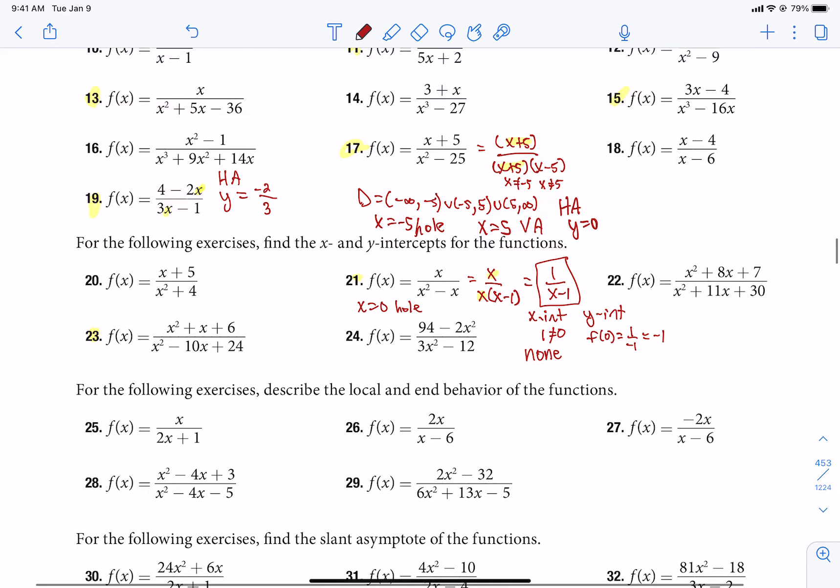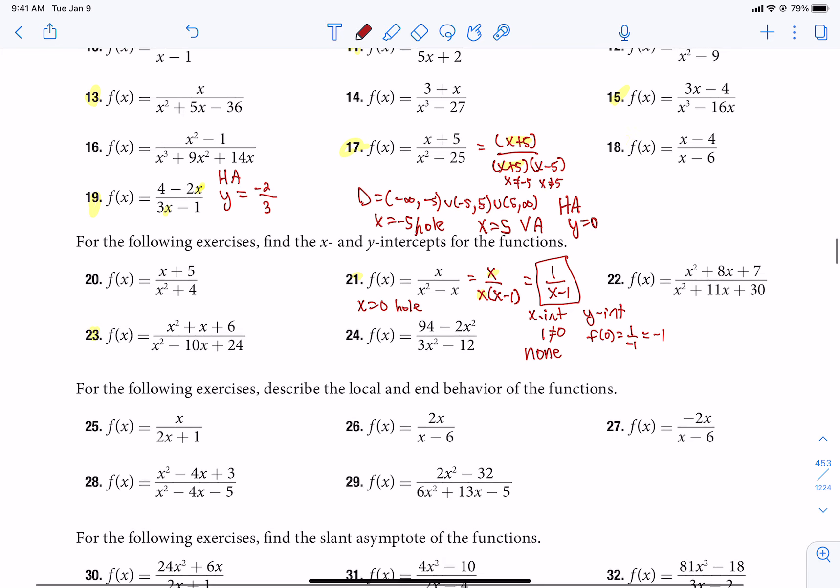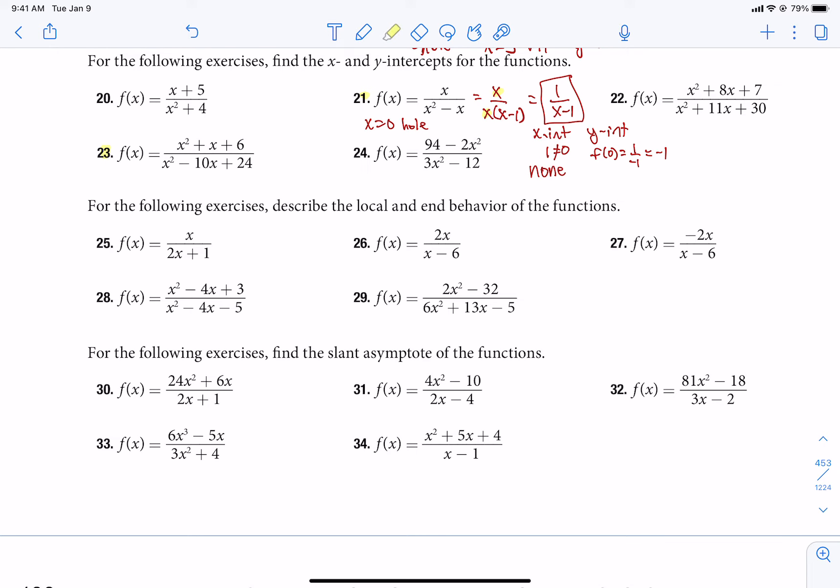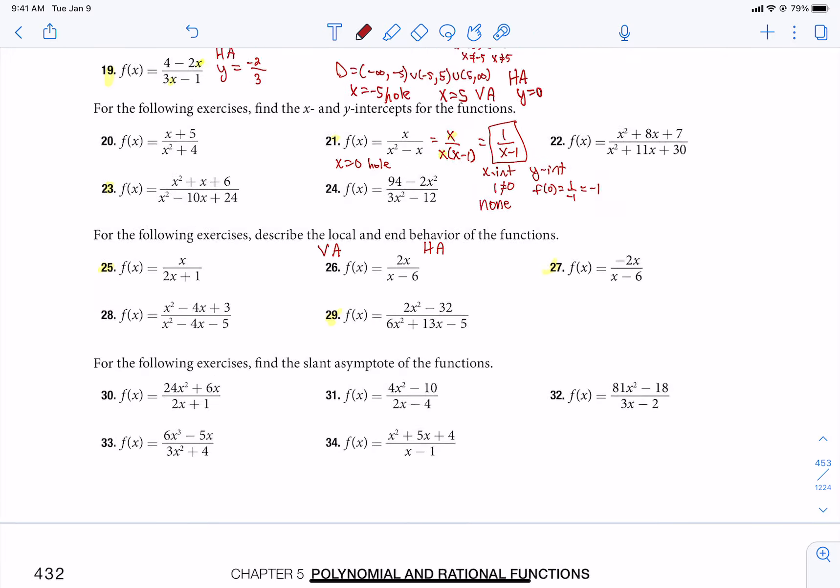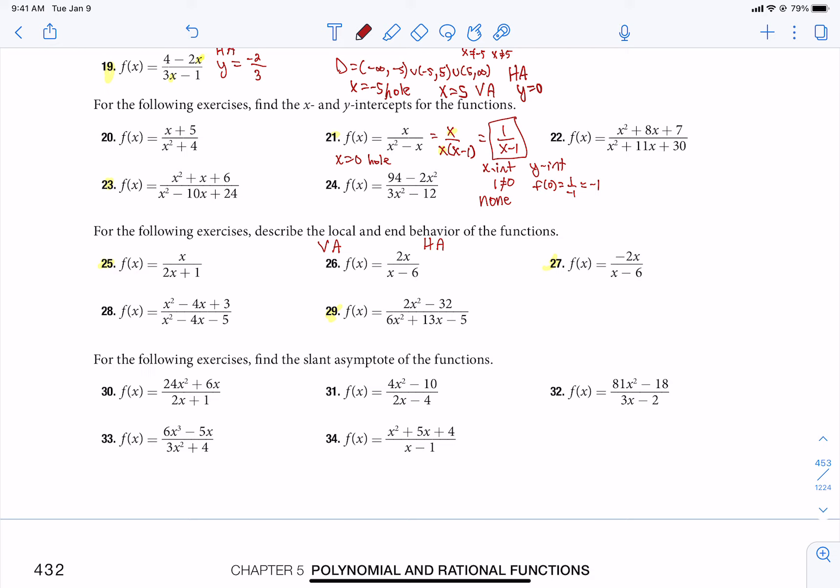So that's what you want to do for 21 and 23. Let's talk about 25, 27, and 29. It says describe the local and the end behavior. Local behavior is our vertical asymptotes. End behavior is our horizontal asymptotes. The only difference now is we're going to use that little arrow notation. We're still going to find what's our vertical asymptote, what's our horizontal asymptote. And then we'll describe what goes from there.